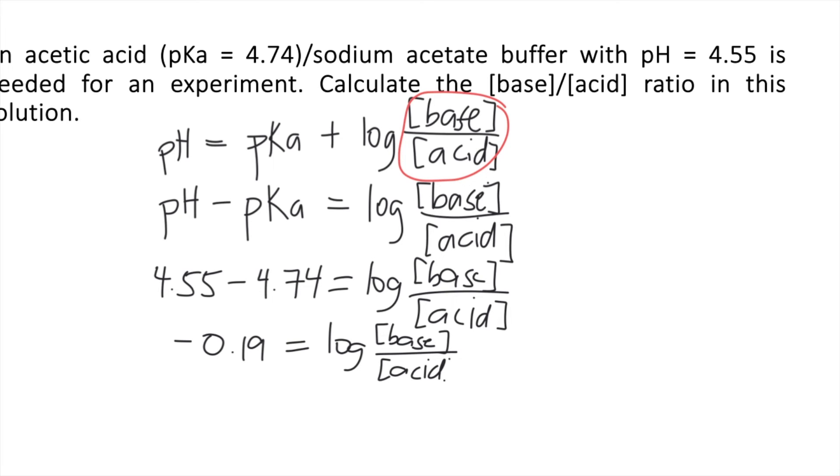To remove the log, you take 10 raised to whatever is on the left side. So 10 raised to negative 0.19 will give you the ratio of base over acid.